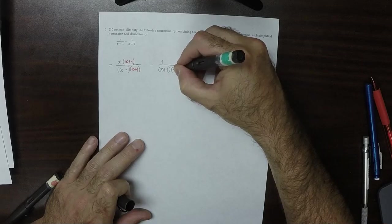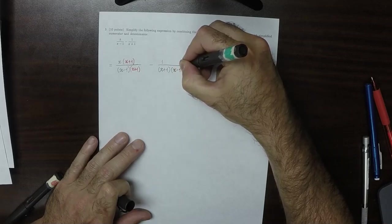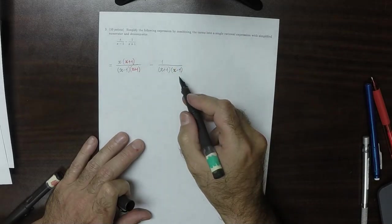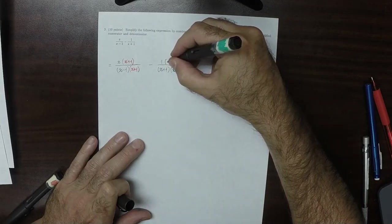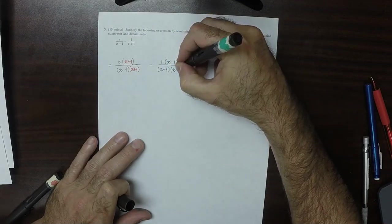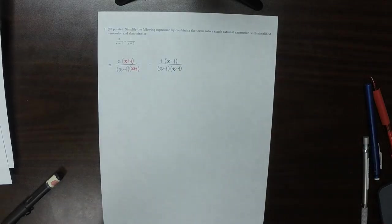This denominator is missing an x minus 1. So I'll put it here. But we can't just leave it there. We also need to put it up here so that the green ones would cancel and we wouldn't have changed the problem.